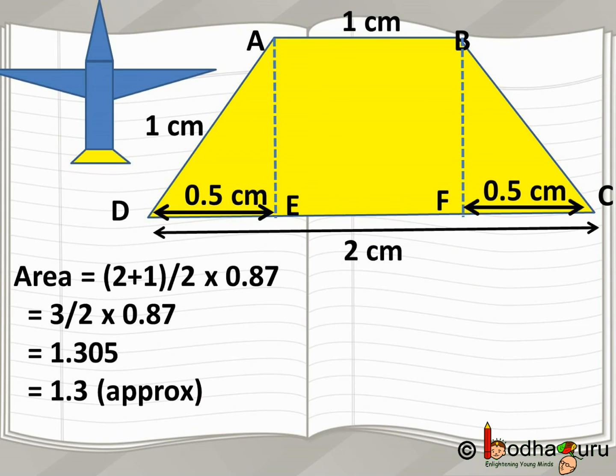Now, we can calculate the area of the trapezium. So, area of trapezium is equal to 2 plus 1 by 2, that is half of the sum of the two parallel sides, multiplied by 0.87 as this is the height of the trapezium. So, this becomes equal to 3 by 2 multiplied by 0.87 which is equal to 1.5 multiplied by 0.87. This is equal to 1.305 or you can say 1.3 square centimeter approximately.